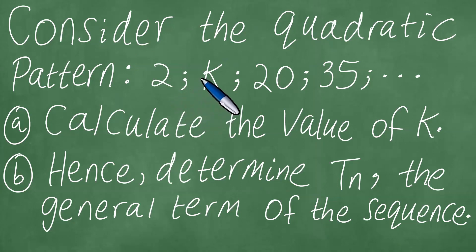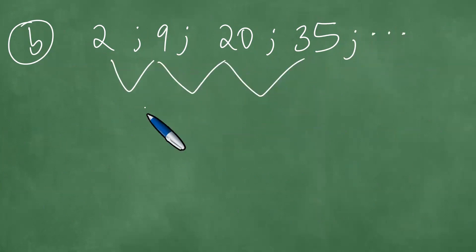So if you have that k equals 9, and we have the sequence 2, k, 20, and 35, so we have the following part b. We're going to have exactly 2, 9, 20, 35, and so on. Now, if you subtract these, you're going to have 9 minus 2, which is exactly 7, 20 minus 9, which is 11, and then we have 35 minus 20, which is 15, and we get further differences here.